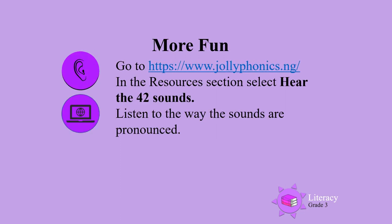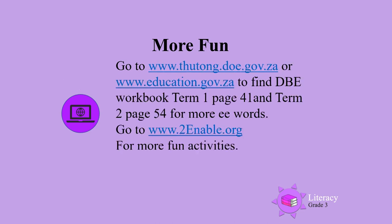For more fun, go to the Jolly Phonics website and in the resources section, select 'Hear the 42 Sounds.' Then listen to the way the sounds are pronounced. You can also go to the DBE website and look for the DBE workbook, term 1 page 41 and term 2 page 54, for more ee words. Go to www.toenable.org for more fun activities.